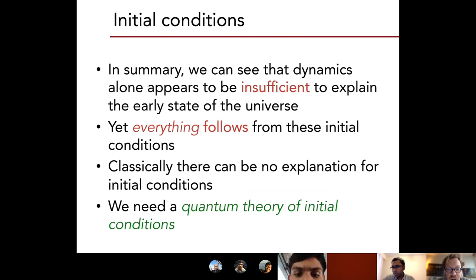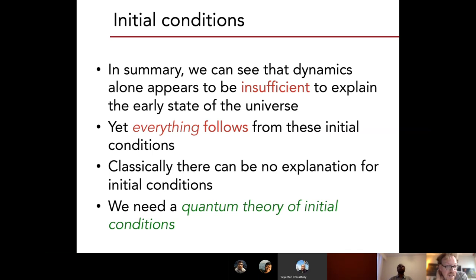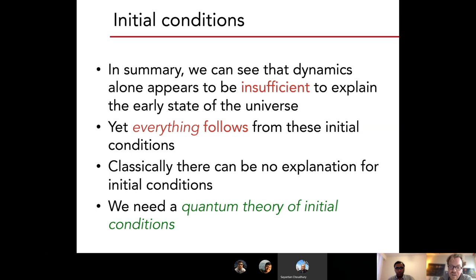All of these things show that the dynamics of the early universe is not enough to explain the initial conditions. Classically there is not much hope for finding such an explanation, because classically everything is time-reversal invariant and you cannot really find a good way of assigning probabilities to different starting points. So what we really need is a quantum theory of initial conditions. That's one of the main goals of quantum cosmology — to set up such quantum theories of initial conditions.